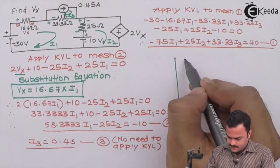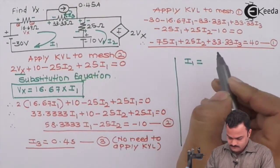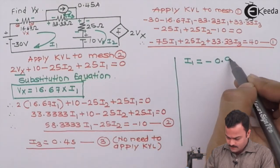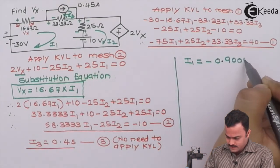So we will get i1 as minus 0.9005 ampere.